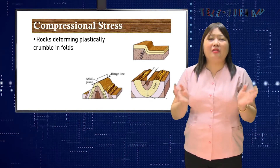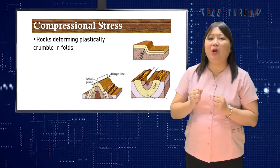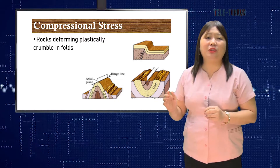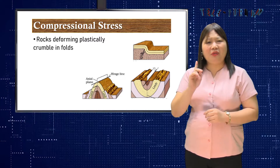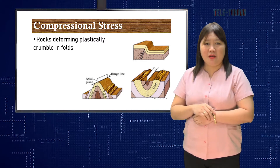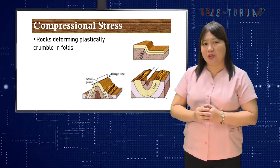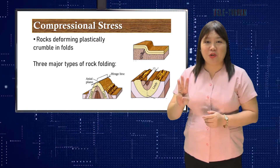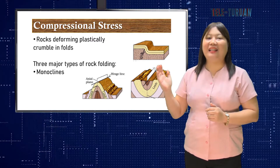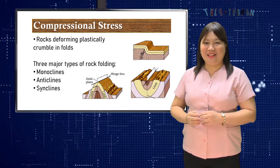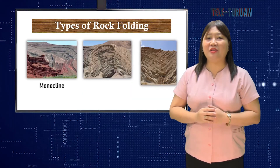Rocks deforming plastically under compressive stresses crumple into folds, and they do not return to their original shape. If the rocks experience more stress, they may undergo more folding or even fracture. There are three major types of rock folding: monoclines, anticlines, and synclines. A monocline is a bend in rock strata that are otherwise uniformly dipping or horizontal.